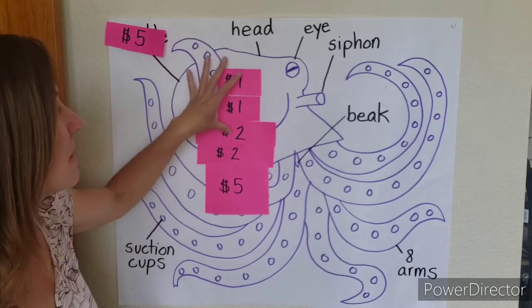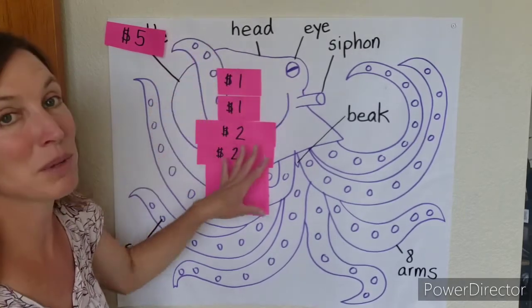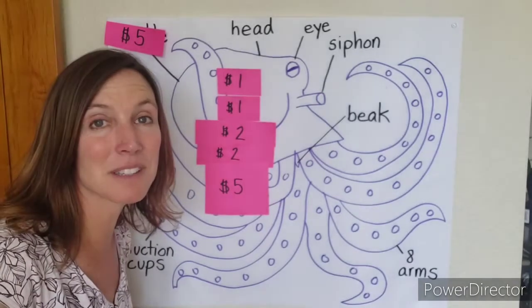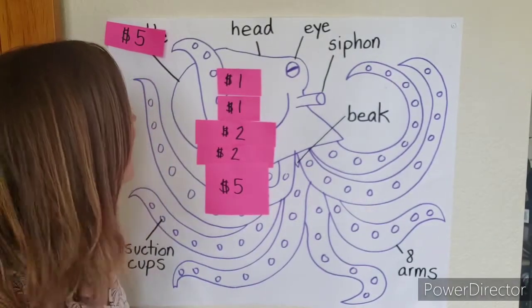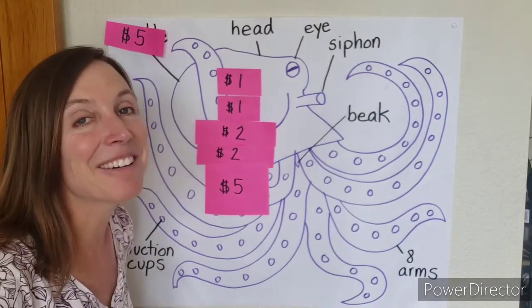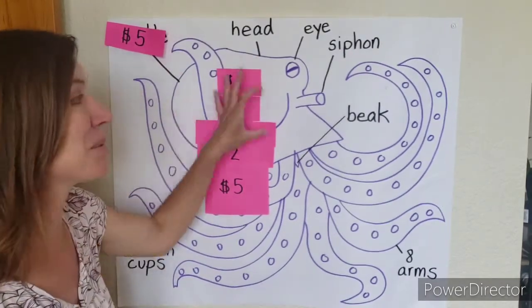So that's five dollars. And then what about this? This is the biggest part of his head, biggest part of his body. It keeps all of his organs inside, like the digestive organs and his brain, all kinds of things like that are in this part of the octopus's body. It's called the mantle.